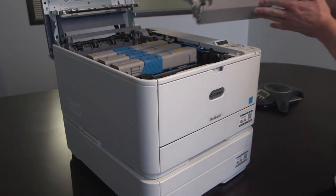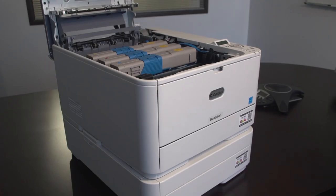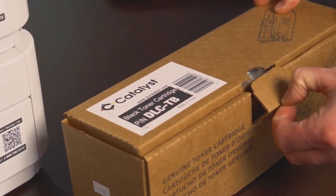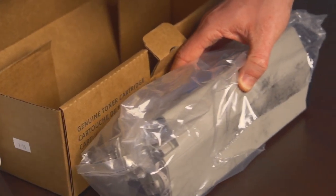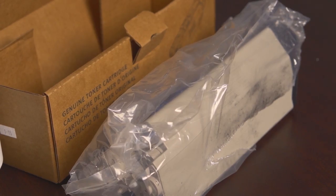To remove a toner cartridge, slide the blue release collar on the empty cartridge to the right. Then lift the right end of the cartridge and pull it up and to the right. Place the cartridge where any residual toner won't make a mess.